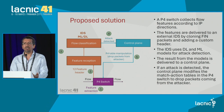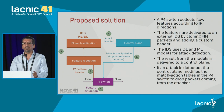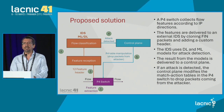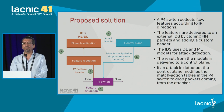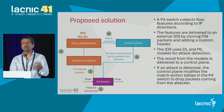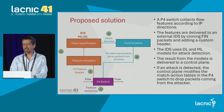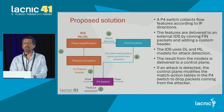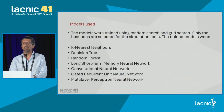In the P4 switch, we process the flows, extract the features, and send them to an external IDS. The IDS notifies the controller in the control plane whether the received flow is an attack or benign. If it is an attack, the controller sends an order to the switch in the data plane to mitigate the attack or block the IP of that attacker.